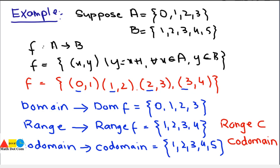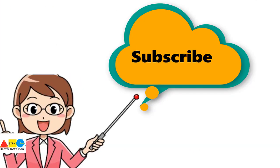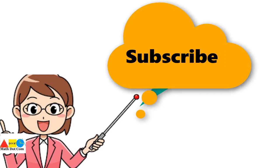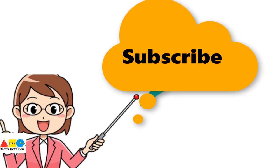Range depends on the second elements of the function, while co-domain does not depend on the function — it gives you all elements of the given set B. And domain is the set of first elements of the ordered pairs in the function. Thank you for watching. If you like this video please don't forget to subscribe our channel for more updates.